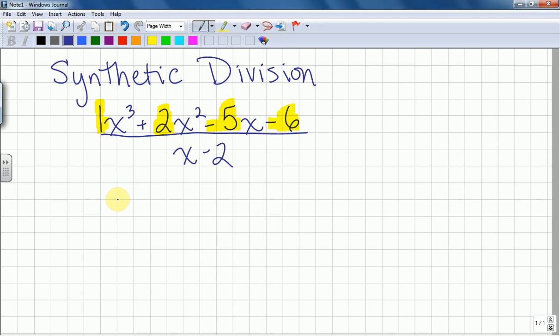I'm going to start off my problem by listing 1, 2, negative 5, and negative 6. So my synthetic division problem looks a little bit different than a traditional long division, but I'm going to show you how to use this particular process.